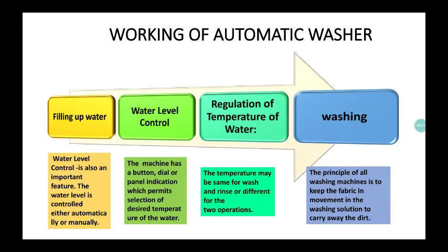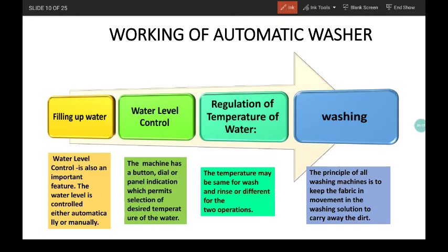What are the working of automatic washer? There are different steps. First one is filling up the water. Then, water level control. The water level is controlled either automatically or manually. Then, regulation of temperature of water. The machine has a panel indication through which temperature can be changed. Temperature may be the same or vary for wash and rinse cycle. And last one is washing. The principle of all washing machines is to keep the fabric in movement.